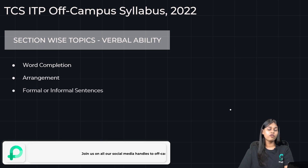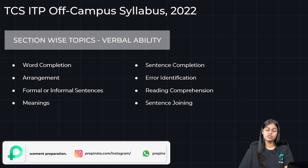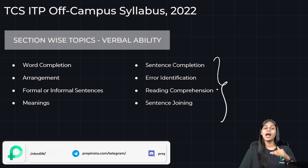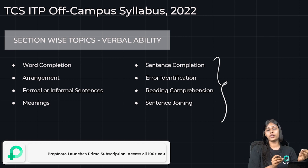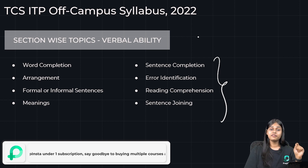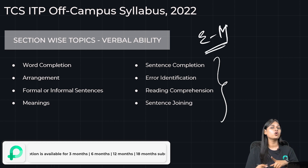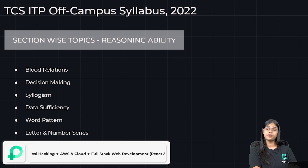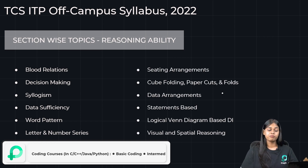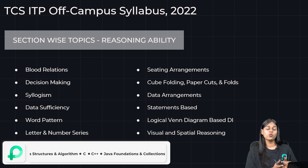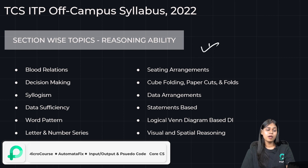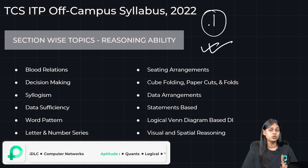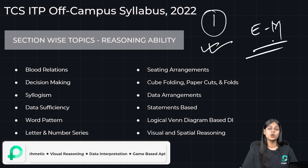For Verbal Ability in the Foundation Round, topics include: word completion, arrangement, formal or informal sentences, meaning/sentence completion, error identification, reading comprehension, and sentence joining. The difficulty is easy to medium. For Reasoning Ability, topics include: blood relations, decision making, syllogism, data sufficiency, word pattern, letter and number series, and other topics listed on screen. You can visit the PrepInsta dashboard for a full topic list with quizzes to practice. Remember, this is all for the Foundation Round — Round 1 — not Round 2.